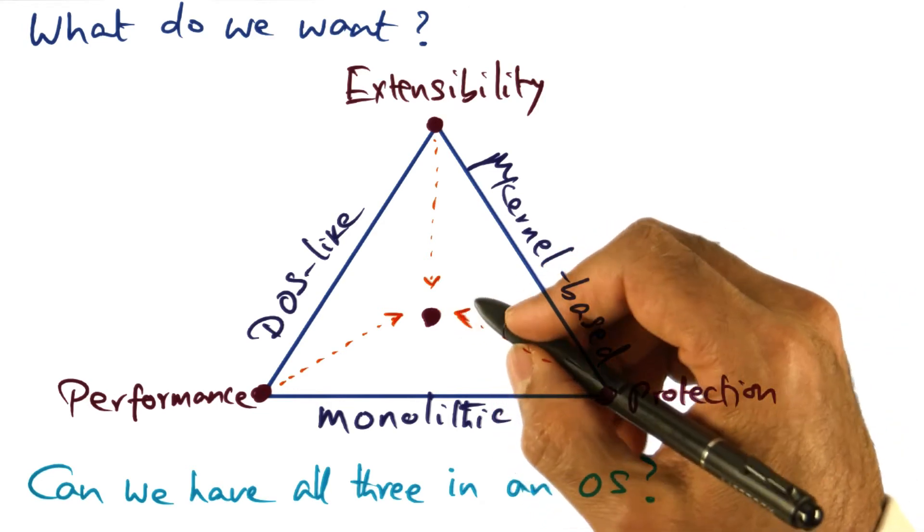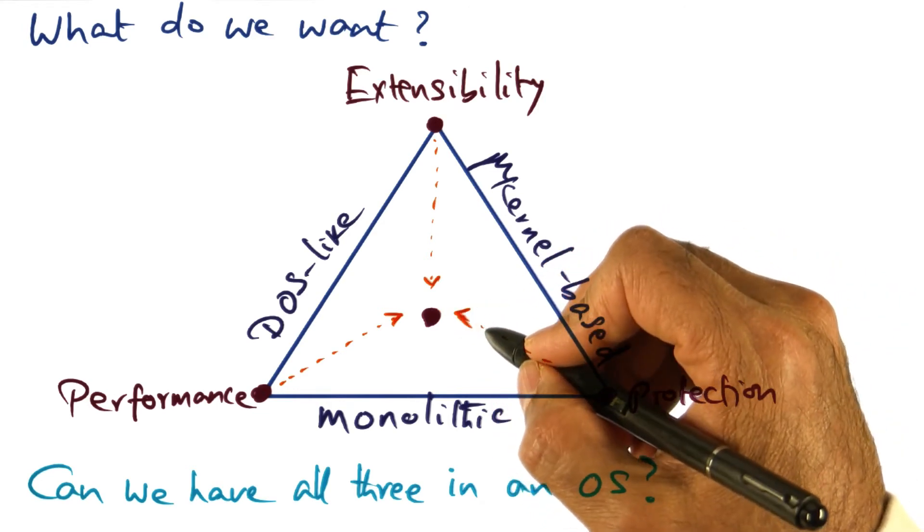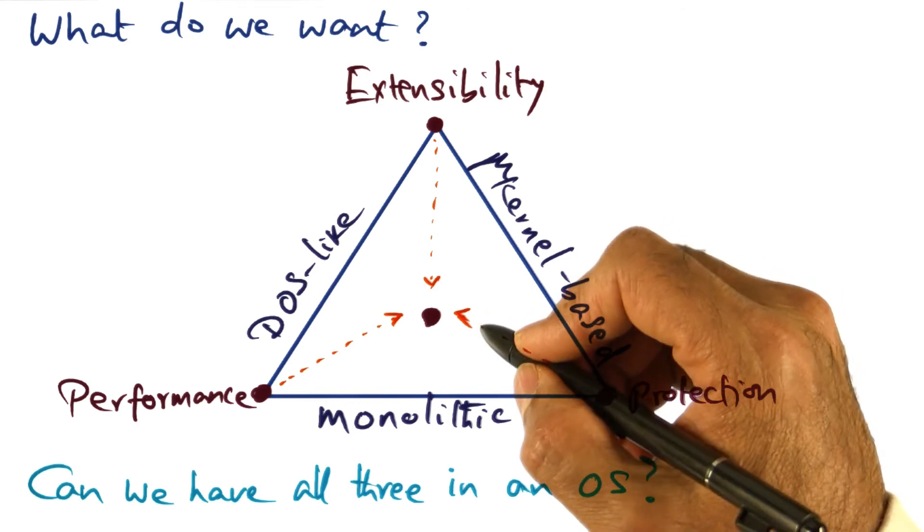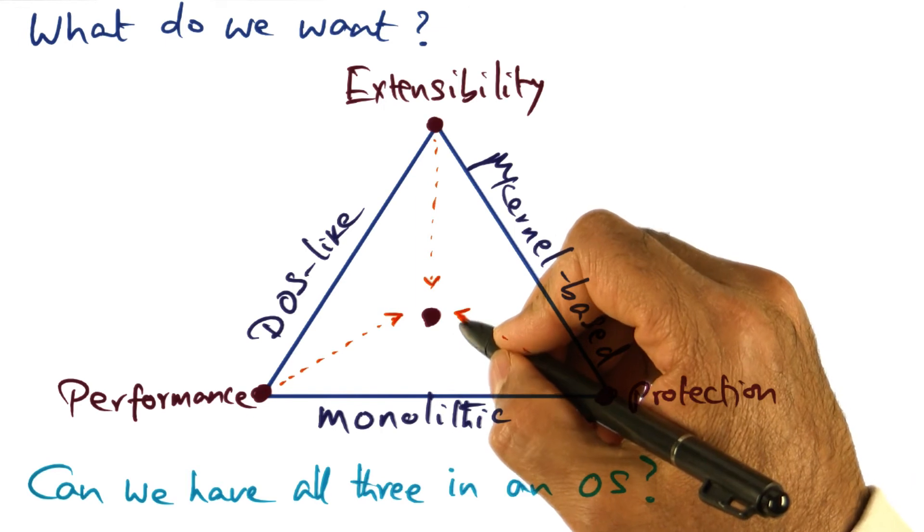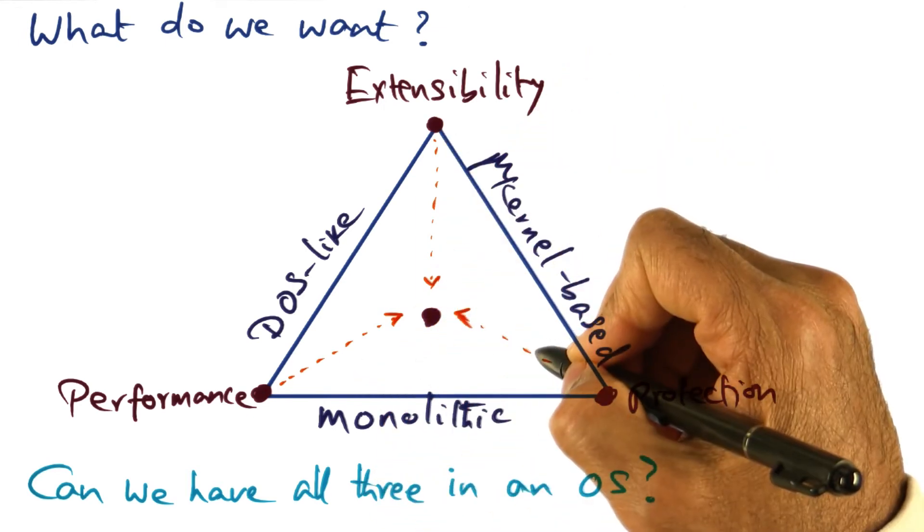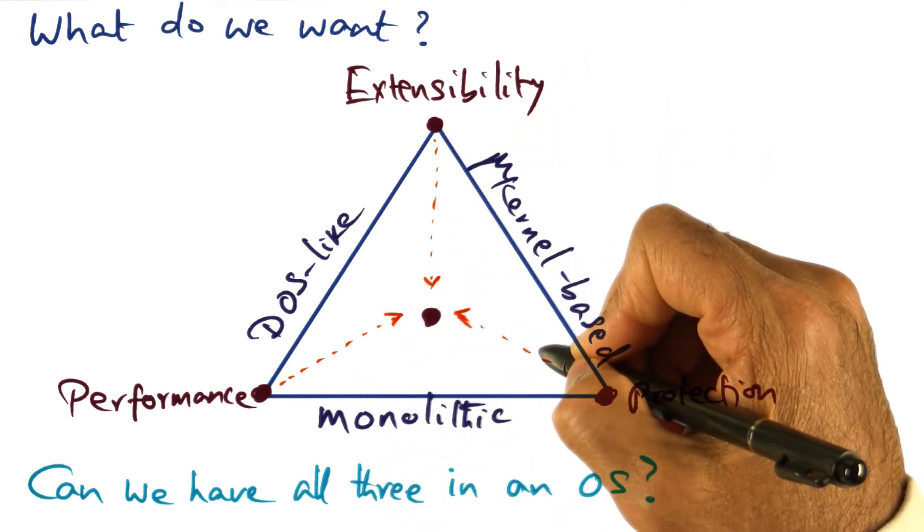And the research ideas that we will study in this course module is looking at ways to get to the center of the triangle so that all three attributes can be present in the structure of the operating system.